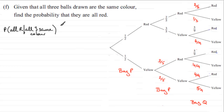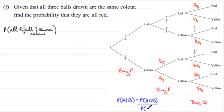We've got to be aware of the formula that is often quoted: the probability of one event A given B is always equal to the probability that both events occur — that's A intersection B — all divided by the probability of the given event, in this case B. This is a formula you should be familiar with for conditional probability.